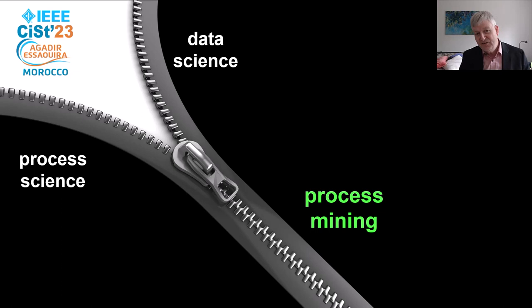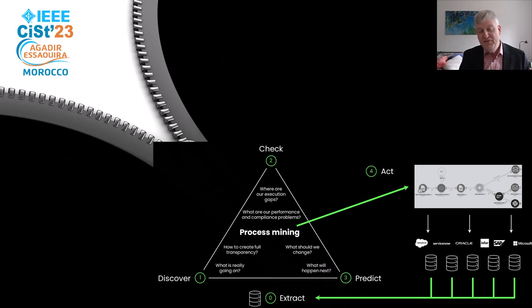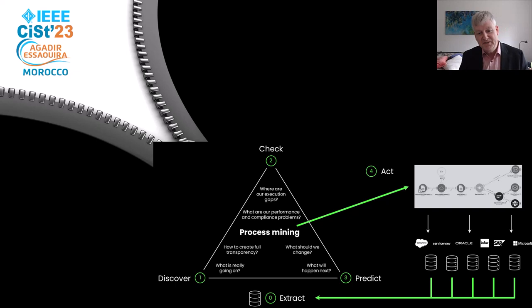I started working on process mining around 25 years ago, and at that point in time I was the only person systematically working on this. In process mining, you first start by extracting event data from source systems like SAP, Oracle, or any other enterprise system. Most organizations do not have a single system but have hundreds, sometimes thousands of different systems supporting processes. A key challenge is extracting the data in such a way that you can do process mining — that's step zero.